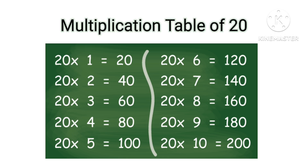Table of 20: 20×1=20, 20×2=40, 20×3=60, 20×4=80, 20×5=100, 20×6=120, 20×7=140, 20×8=160, 20×9=180, 20×10=200.